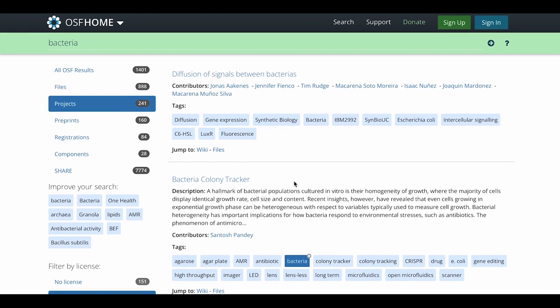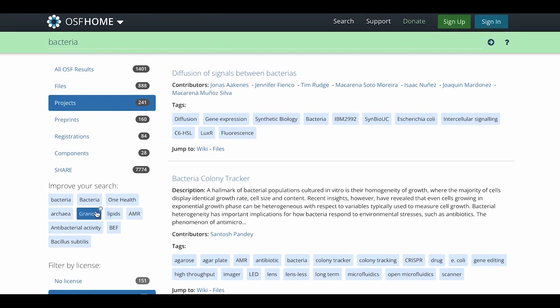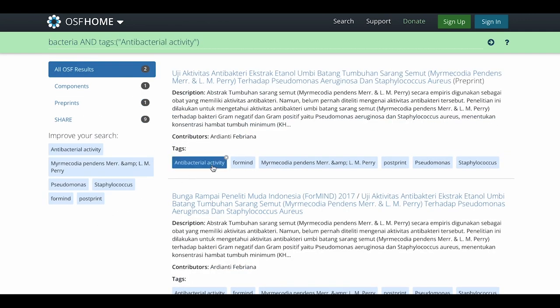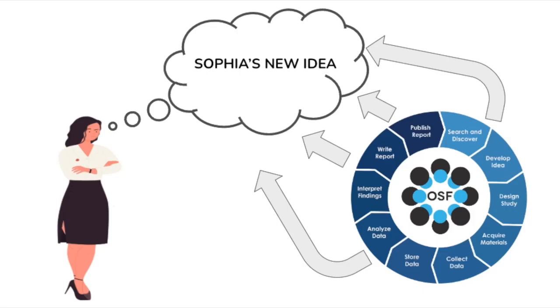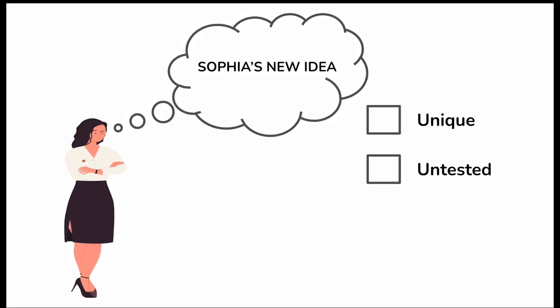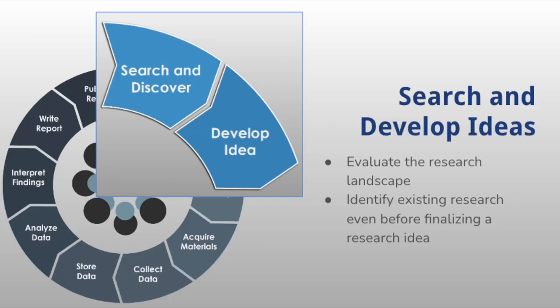Through her search on the OSF, Sophia is surprised not only to find pre-publication manuscripts, but also countless cutting-edge research protocols, collected data, and analyses related to her research interest. Since these other researchers have shared their work on the OSF, she is now able to build off of their study ideas from all stages of research. Sophia is reassured that her research idea is unique and untested. All materials shared on the OSF open the door for new potential collaborations on future projects.